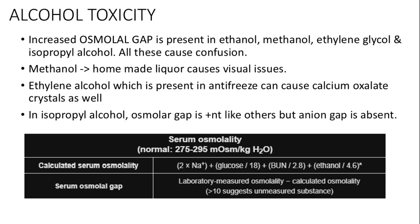Alcohol toxicity from substances like ethanol, methanol, ethylene glycol, and isopropyl alcohol increases the osmolar gap, calculated as lab-measured osmoles minus the formula: 2×sodium + glucose/18 + BUN/2.8. Methanol, often found in homemade liquor, causes vision issues and an osmolar gap. Ethylene glycol in antifreeze can cause calcium oxalate crystals. In isopropyl alcohol ingestion, an osmolar gap is present but an anion gap is absent.